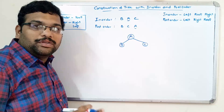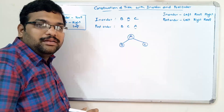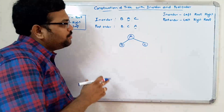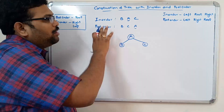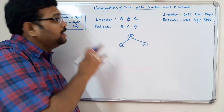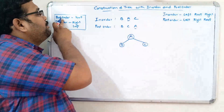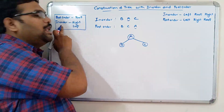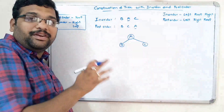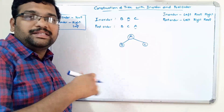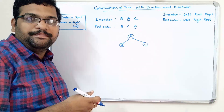So with the help of inorder and postorder, we can construct a tree. With the help of postorder we find the root, and with the help of inorder we find the left subtree and right subtree, and we repeat the same process.